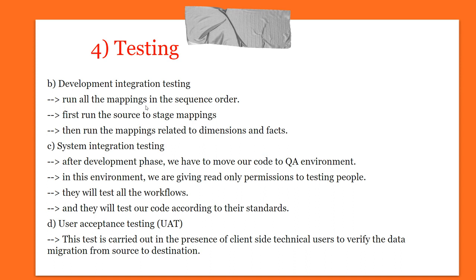Development integration testing involves running all mappings in sequence order. First, run the source-to-stage mappings, then run the mappings related to dimension tables as well as fact tables. This is very important in integration testing — first load from source to stage area, then map to the dimension tables and fact tables.